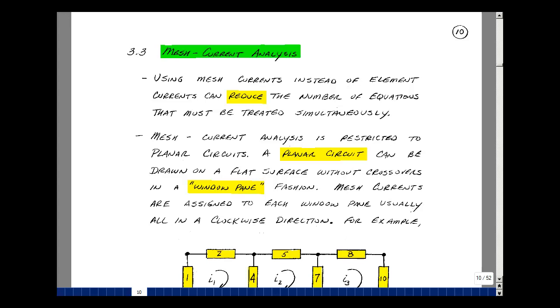This lesson deals with mesh current analysis. You can find these notes in the course e-book in Chapter 3, starting on page 10. Using a method called mesh currents, instead of element currents, we can reduce the number of equations we have to solve simultaneously.